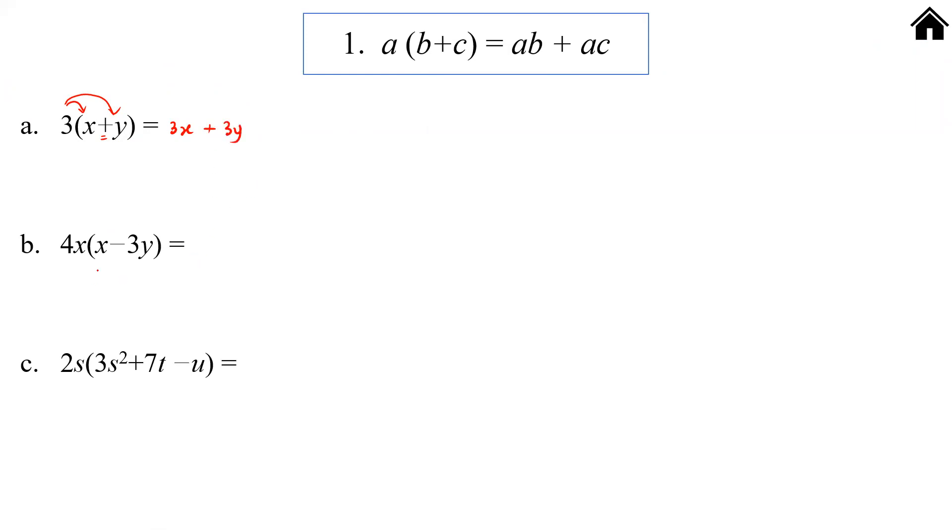The second part: inside the bracket we have two terms, outside the bracket we have 4x. Always remember, number times number, variable times variable. So 4, there is an invisible 1 here, so 4 times 1 we have 4. Variable times variable: x times x we have x². After we have done the first term, continue with the second term. There is a minus there, so we follow minus and multiply into the second term. Number times number: 4 times 3 is 12, x times y so xy. That's it.